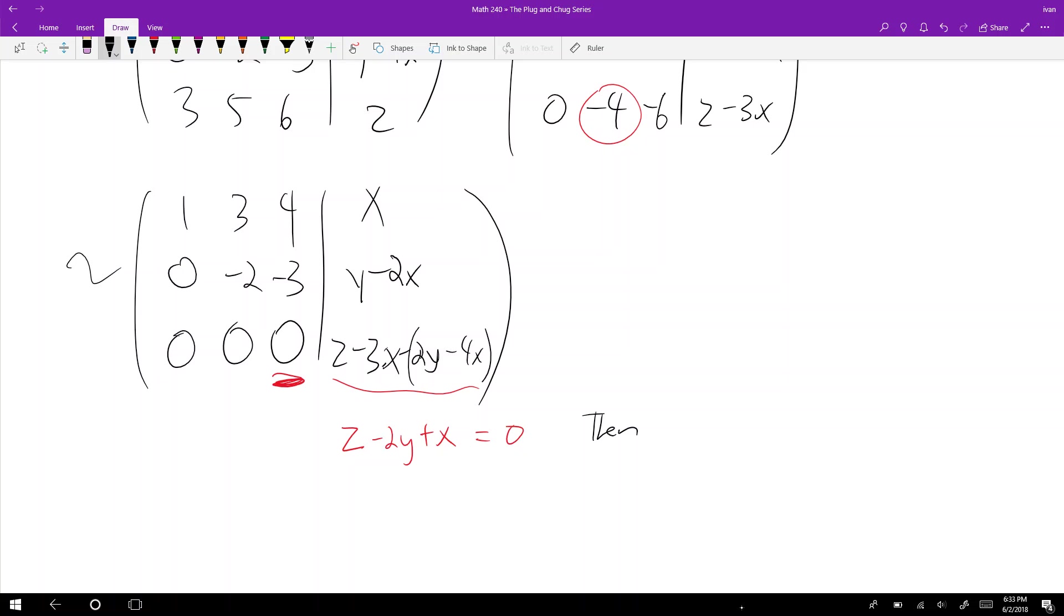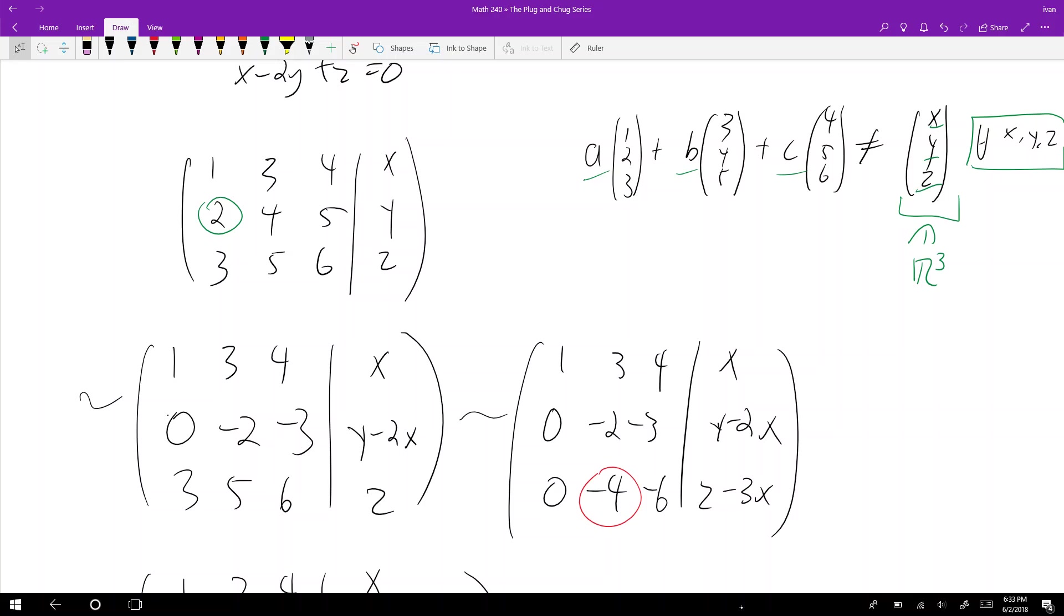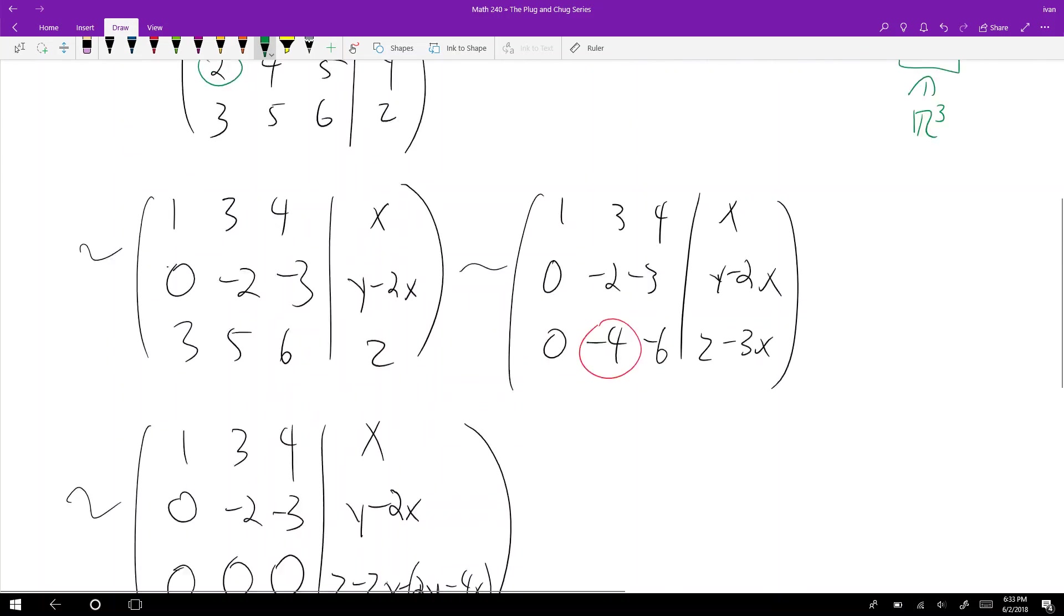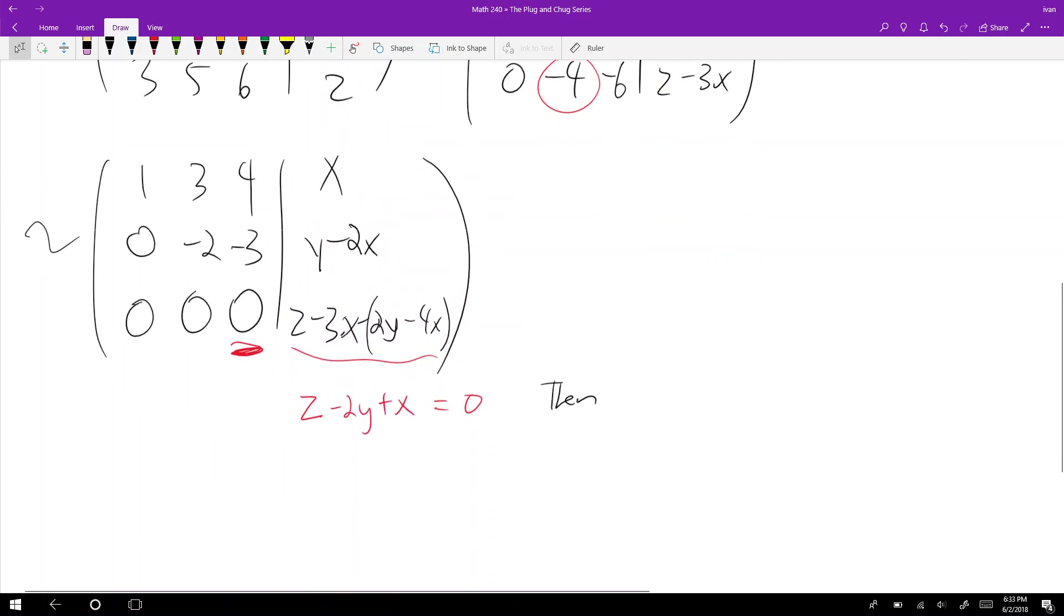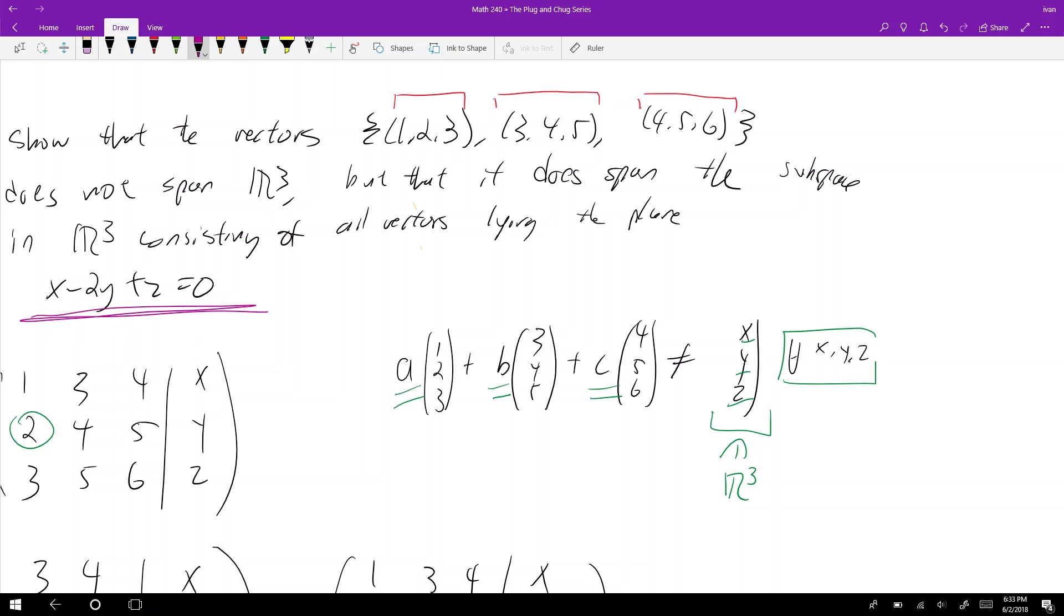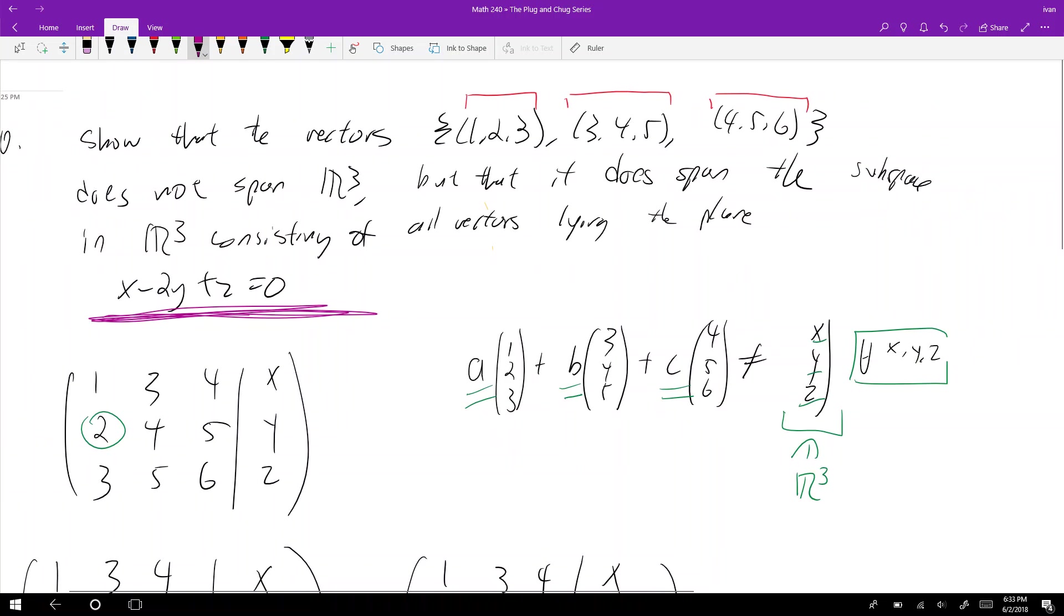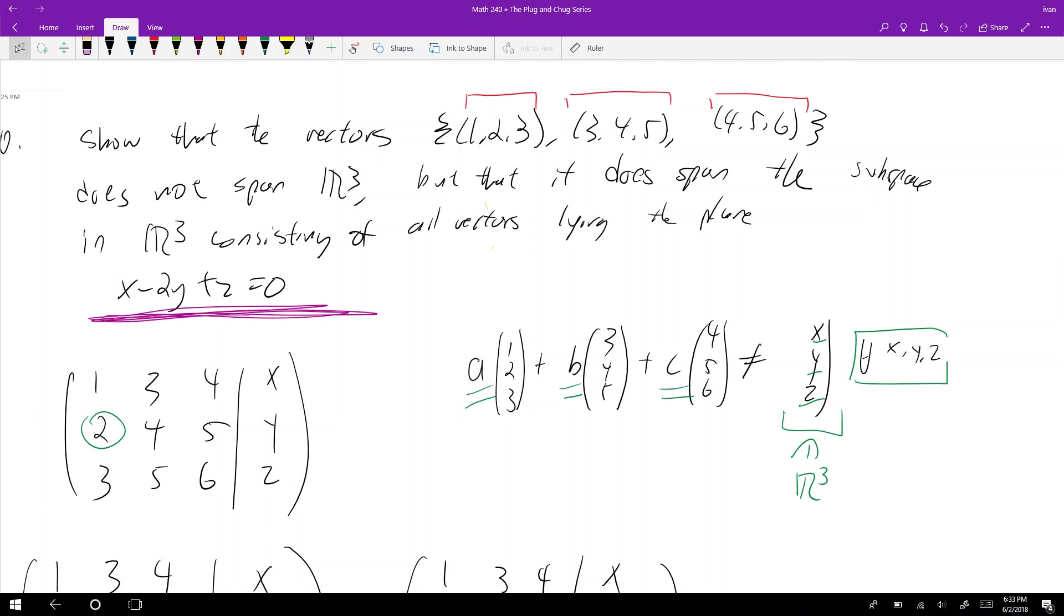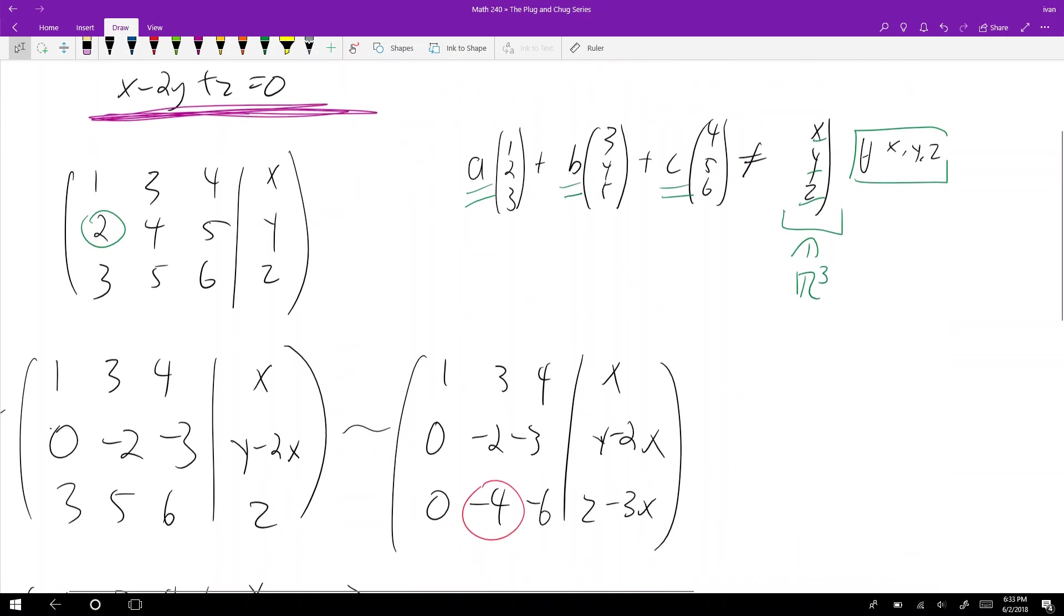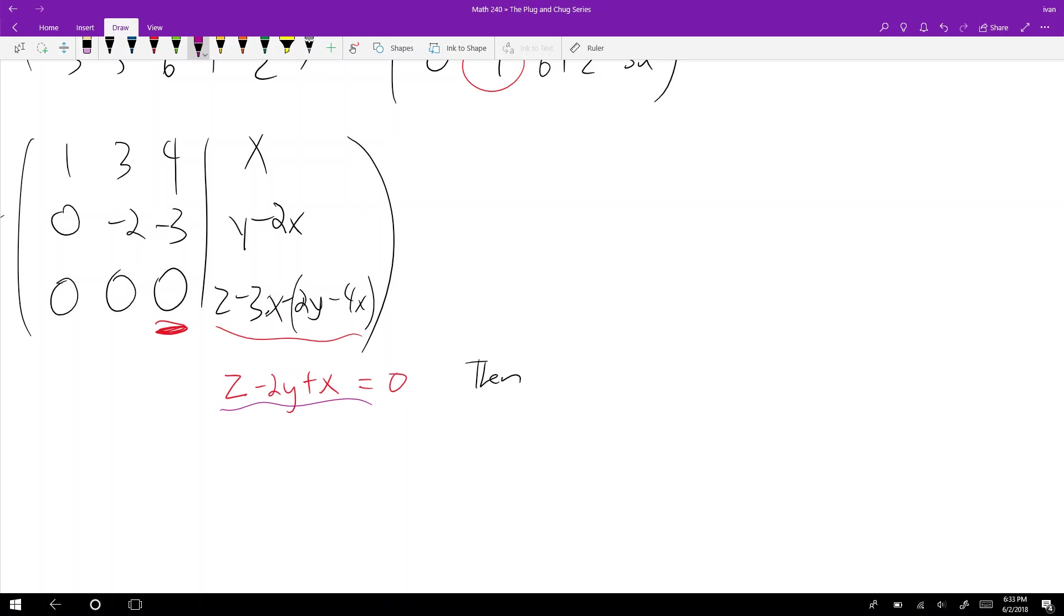This relationship holds if it satisfies the equation z-2y+x=0. That shows the second part - if we satisfy x minus 2y plus z equals zero, then the set of vectors (1,2,3), (3,4,5), (4,5,6) spans that vector space. It spans all vectors lying in this plane.